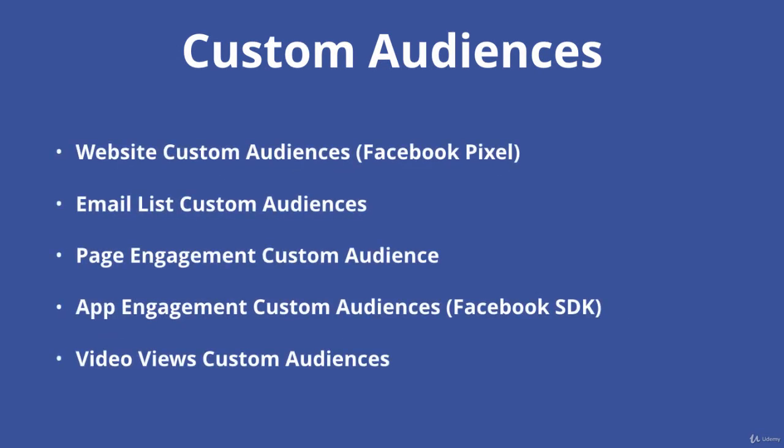In terms of the different types of custom audiences, the general theme that links them together is retargeting or remarketing. So retargeting the people who've already engaged with your website and creating a custom audience of those people — you need to have the Facebook pixel in order to do that. You can create a custom audience and retarget people who are on your email list, who have engaged with your Facebook page, or who have engaged with your app — you need to have the SDK installed for that, which is essentially the equivalent of the Facebook pixel. You can even retarget people who have watched a video you put on Facebook with, say, a lead ad to get leads out of them.